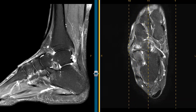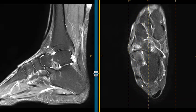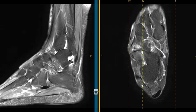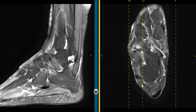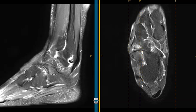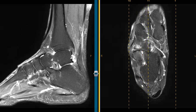So this is a case of a calcaneonavicular coalition with an anomalous articulation, and associated degenerative changes between the calcaneus and cuboid bone causing ankle pain. Thank you very much.